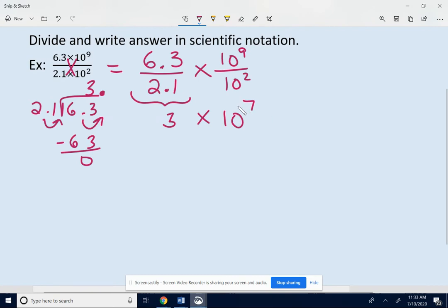So the shortcut: divide the decimals and then subtract the exponents on your 10s. Divide the decimals and subtract the exponents on your 10s.